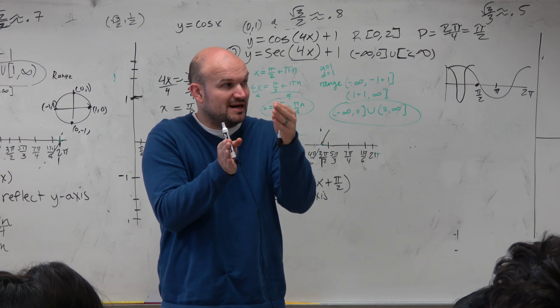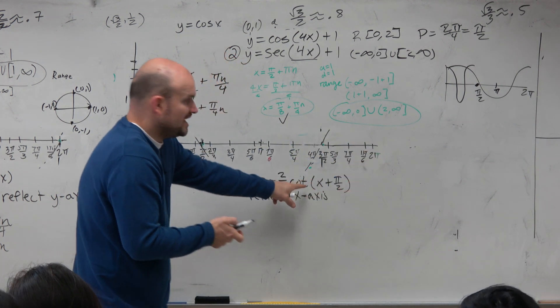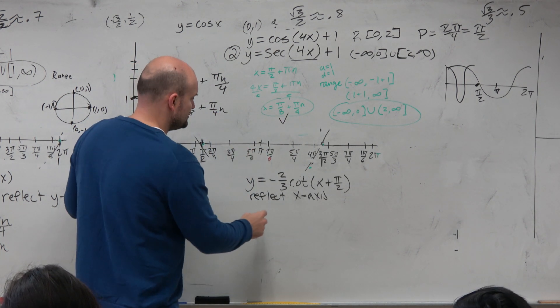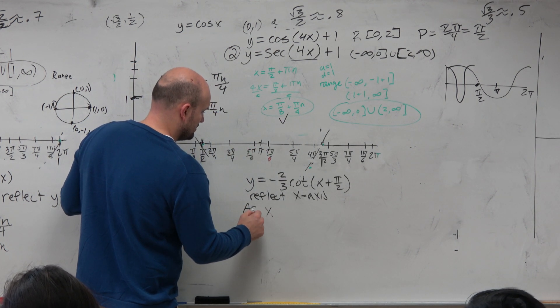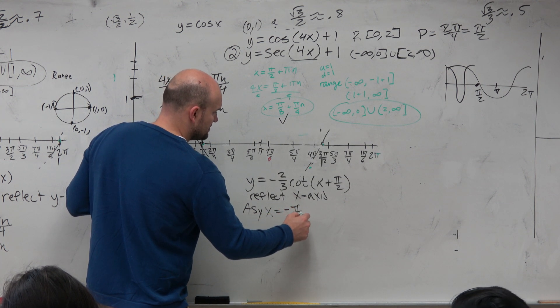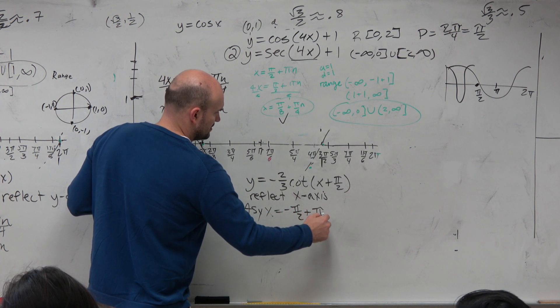And then the distance to my next asymptote is going to be pi, because that didn't change, right? The distance between all the asymptotes is pi. So my asymptote here is x equals negative pi halves plus pi n.